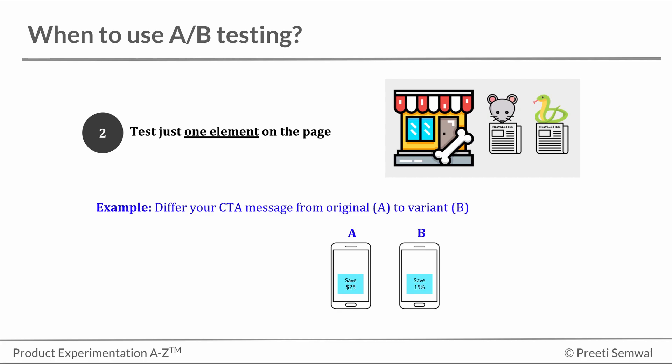And such tests are called A-B-N tests. For example, say if there are three variations plus one control, a total of four, it would be called an A-B-C-D test.